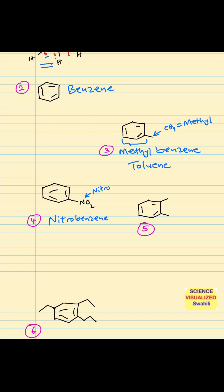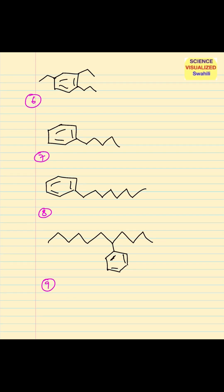In this case, we have a substituent at position one and two. It doesn't matter which way you start — you can call the other one one and then two. At position one you have a methyl group and position two you also have another methyl group. That will be 1,2 — that shows position one and two have the same thing. You use 'di' because there are two methyl groups, so: dimethylbenzene.